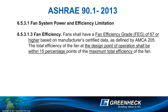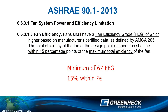We will focus on Section 6.5.3.1, Fan System Power and Efficiency Limitation. It states that fans shall have a fan efficiency grade, also known as FEG, of 67 or higher. This is based on the manufacturer's certified data as defined by AMCA 205. Also, the total efficiency of the fan at the design point of operation shall be within 15 percentage points of the maximum total efficiency of the fan. In other words, a minimum of 67 FEG and the fan's operating point needs to be within 15 percentage points of peak total efficiency.